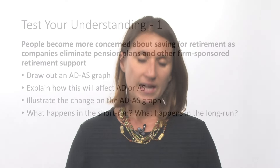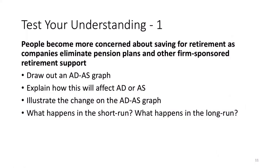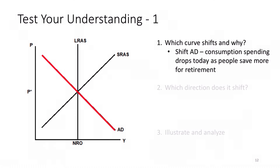Now let's test our understanding with short-run economic fluctuations. You can pause the video if you want and try to take a crack at this example yourself, then come back for the explanation. We'll assume a situation where people become more concerned about saving for retirement as companies eliminate their pension plans and other firm-sponsored retirement support. We want to draw our ADAS graph, explain how this affects aggregate demand or aggregate supply, illustrate the changes, and analyze what happens in the short run versus the long run.